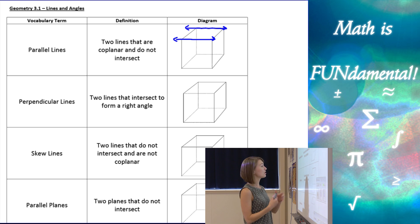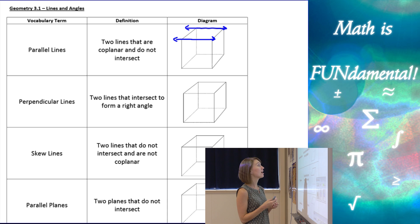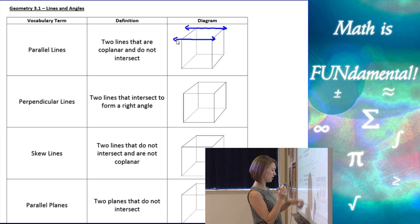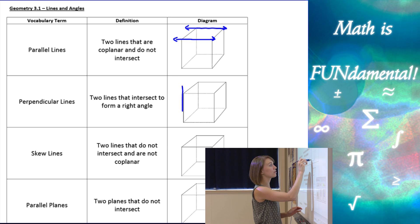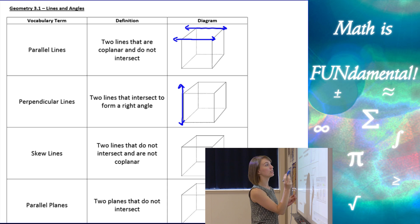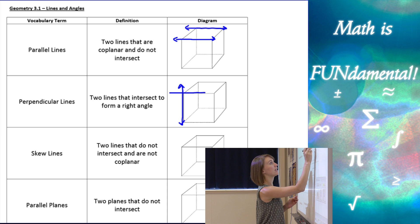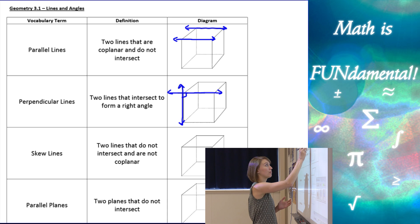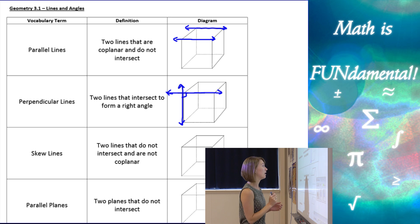Moving on to perpendicular lines. Perpendicular lines are two lines that intersect to form a right angle. In order for lines to intersect, it's given that they already have to lie on the same plane, so we don't need to worry about that piece of the definition. We just need to make sure that they intersect at a right angle. So there are two perpendicular lines there.